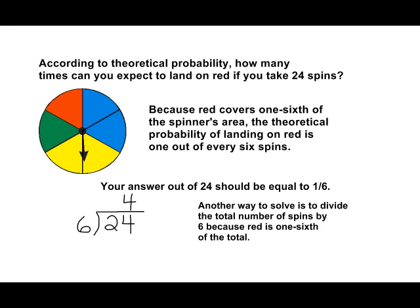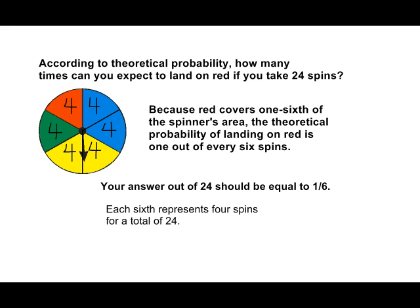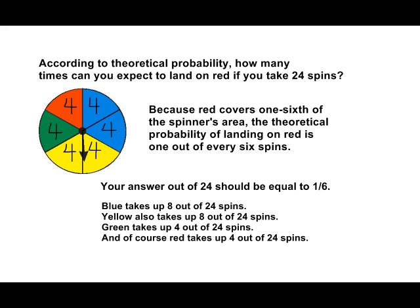Another strategy, which may be helpful when solving a problem such as this, is to write how many total spins each section would get, and it should add up to the total number of spins. Because we divided the spinner into six equal parts, we would have to put four in each section, so those six sections of four would add up to 24.